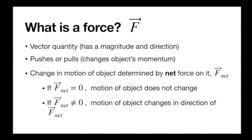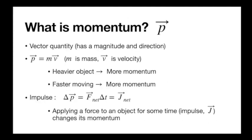It's net force because you can have as many forces as you want acting on an object, but if they sum to zero, it experiences no net force and its motion won't change. Momentum is the quantity we use to describe motion — it's also a vector, points in the same direction as velocity, and it's equal to velocity multiplied by mass. Objects that are heavier have more momentum even if moving at the same speed. Momentum is kind of like inertia.